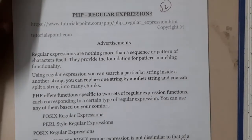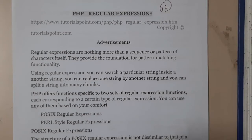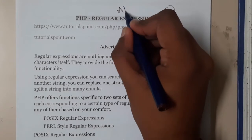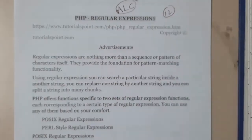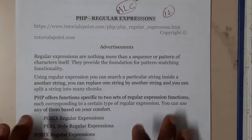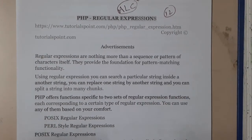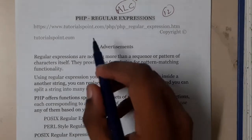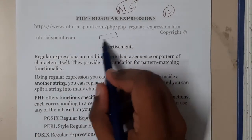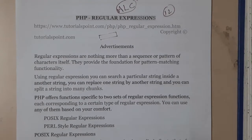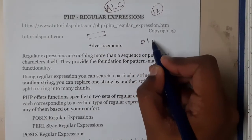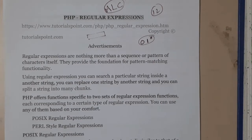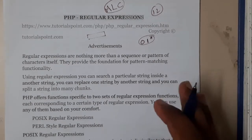So basically, regular expressions — I think most of you have heard about the word regular expression. We already discussed this in ALC, that is Automata Language Computing. Basically, in simple words, we use regular expressions to find patterns. For example, if I want a pattern 0 1 repeated, I'll use star — so 0 1 star means repeatedly writing 0 1.